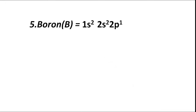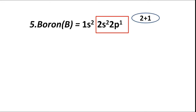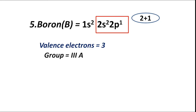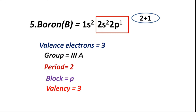Atomic number 5, boron (B), has electronic configuration 1s2 2s2 2p1. The valence shell is L, and number of valence electrons is 2 plus 1, equal to 3. Hence group IIIA or 3A, period 2. Highest coefficient is 2, hence period is second. Block P — valence electrons fill the p sub-shell. Valency is also equal to 3.